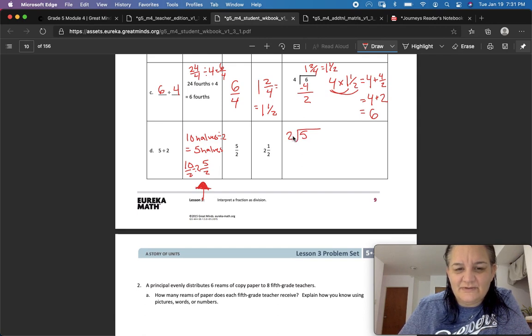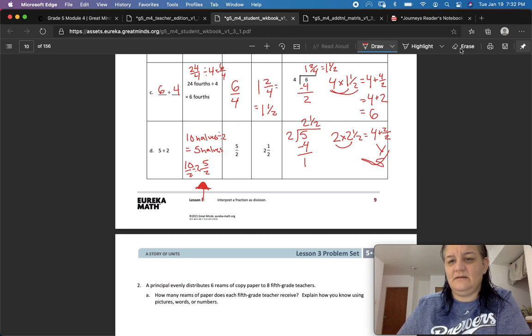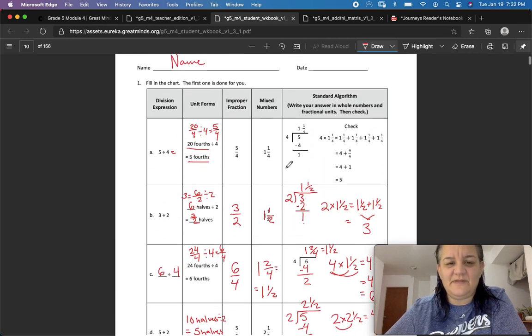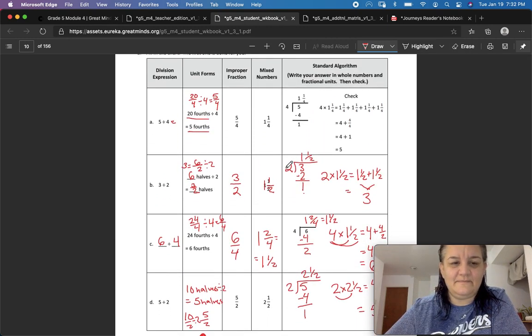Five divided by two. Two goes into five two times. Two times two is four minus, we have one. So that equals one remainder is one-half. And I'm going to multiply these to see if I get five. Two times two and a half equals two times two is four. Two times one-half is two-halves. And that equals five. Good. So we're thinking about fractions as division.